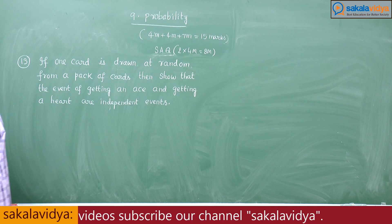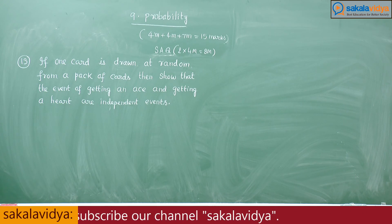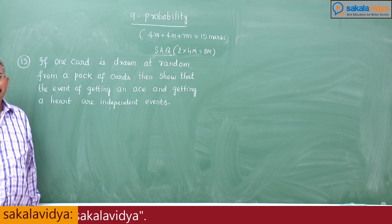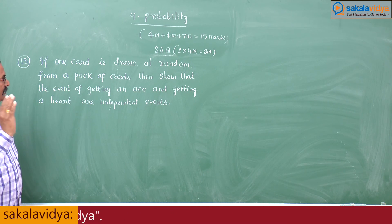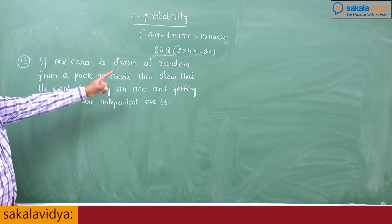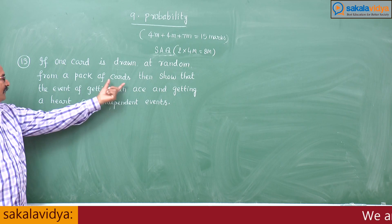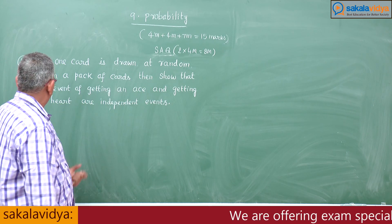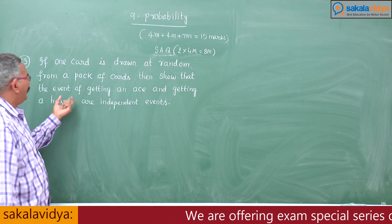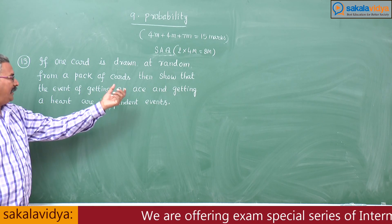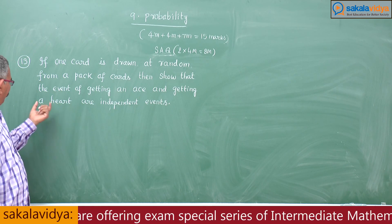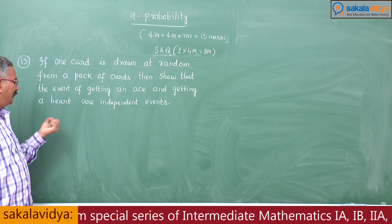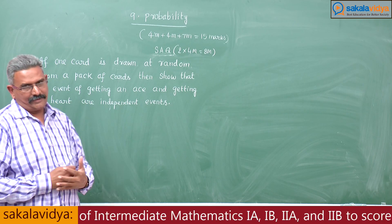If one card is drawn at random from a pack of cards, then show that the event of getting an ace and the event of getting a heart are independent events. This is the problem.